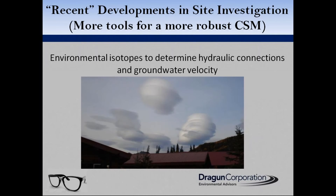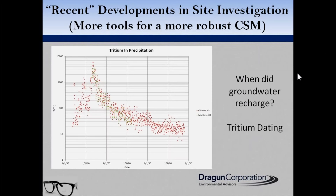There are two oxygen isotopes we deal with: oxygen-16, which is the normal one, and oxygen-18, which is the heavier isotope. These all form parts of the water molecule. I'm going to refer to the ratio of oxygen-18 to oxygen-16 simply as oxygen-18. So how can we use these parts of the water molecule to help us solve hydrogeologic problems?